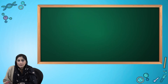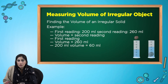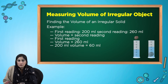Taking the volume of irregular objects is somehow tricky. First, fill a measuring cylinder or beaker with water and note the reading, then submerge the object. The rise in the level of water is the volume of the irregular object.